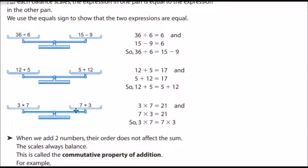Here I have 3 times 7 and 7 times 3. 3 times 7 is 21, and 7 times 3 is 21. So I can say that 3 times 7 is the same as 7 times 3.